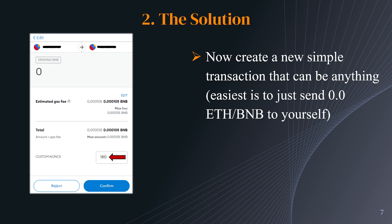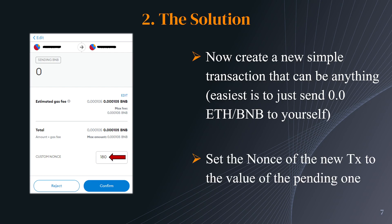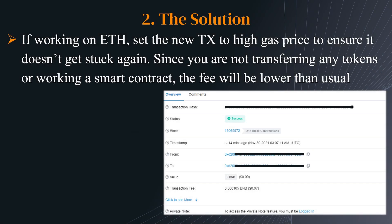Now create a new simple transaction — the easiest is to send 0 BNB or 0 Ethereum to the same address, essentially sending it to yourself. This will broadcast the transaction. When you do, set the nonce of this new transaction to the same value as the pending one — this is the key step. Also make sure to set a high gas fee so the new transaction doesn't get stuck again.